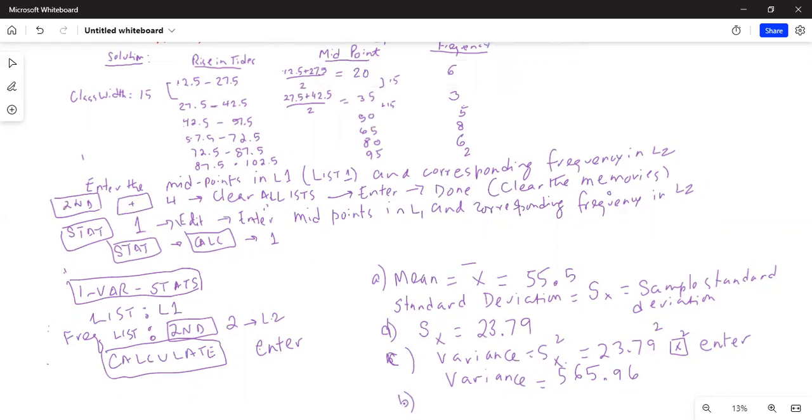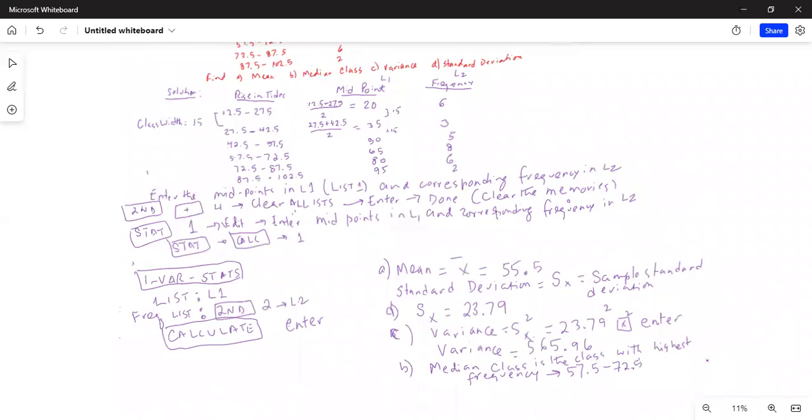In part B, they have asked us to find the median class. The class which has the highest number of frequency is the median class. The median class is the class with the highest frequency, and that class for us is 57.5 to 72.5. That class has a frequency of 8. This is the class with the highest frequency.